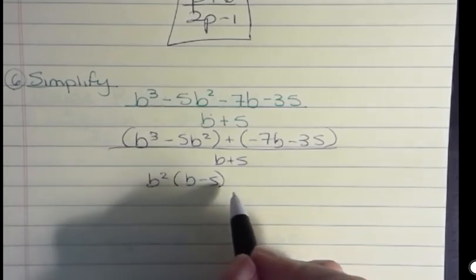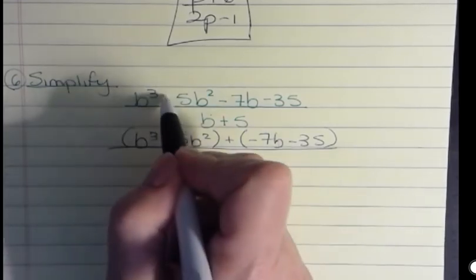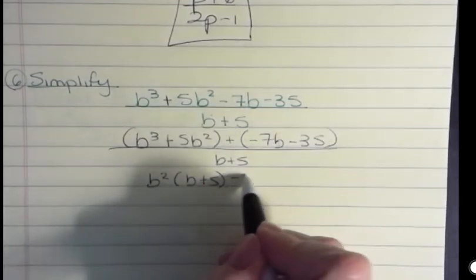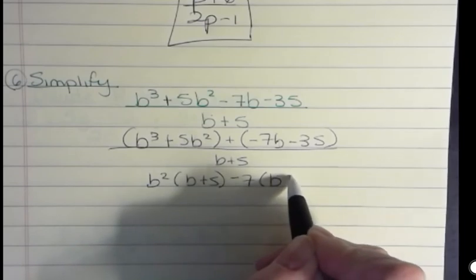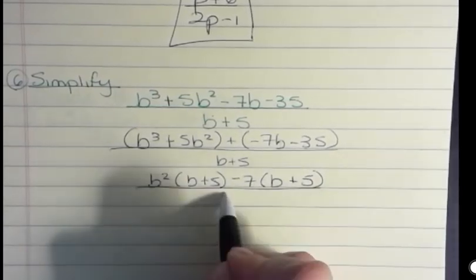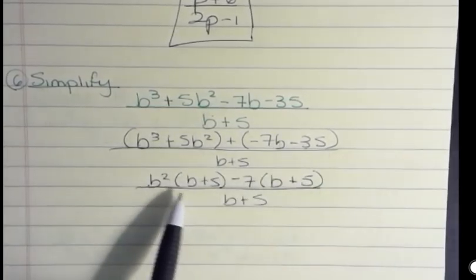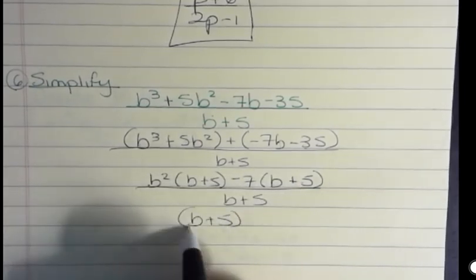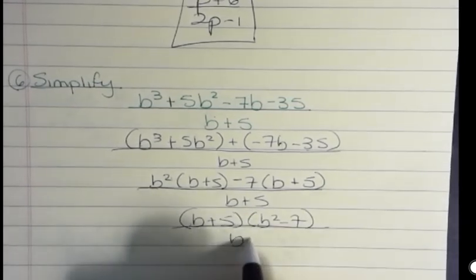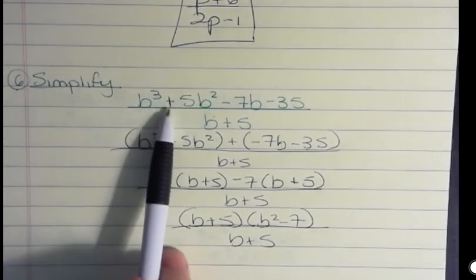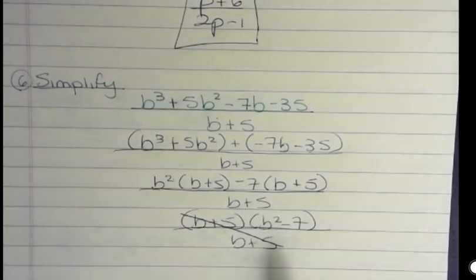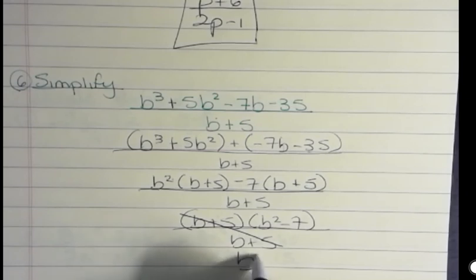On the top, we can take out b². That would leave (b - 5). And we can take out, whoops, I think that might have copied that down wrong because it doesn't make any sense unless that's a plus. Sorry. And that could give us (b + 5). And up here, I'm going to take out the negative 7, which is going to give us (b + 5). Right? Dividing by negative 7 gives us a plus 5. And then I have the (b + 5) down below. I'm not finished factoring on the top. On the top, I take out the common factor of (b + 5), which leaves b² - 7. And I have the (b + 5) down below. So I did have this as a minus. Remember, I had to change it to a plus for this to work out. But now that I'm completely factored, now I can cancel those. And my final answer is just b² - 7.